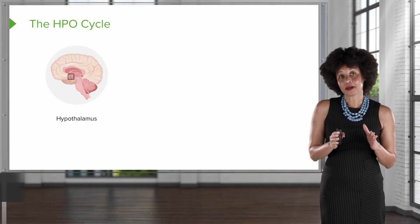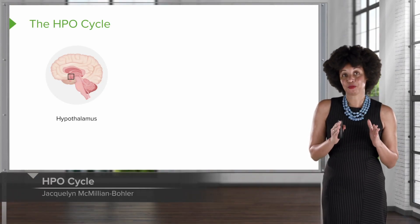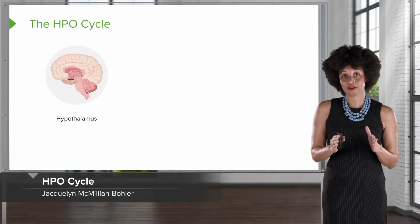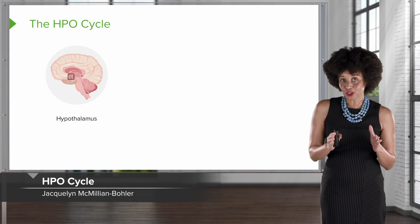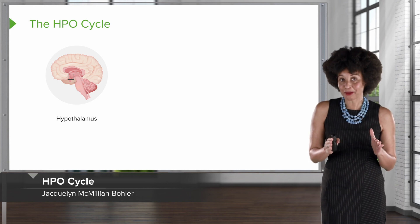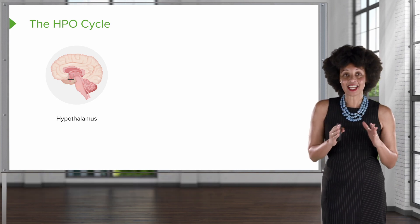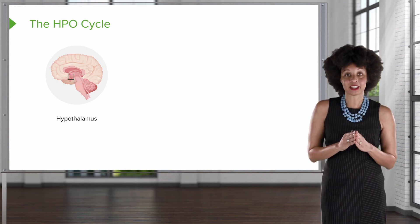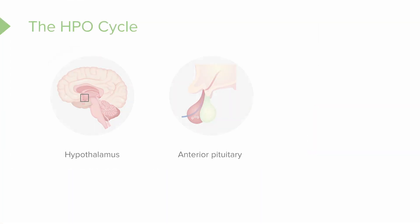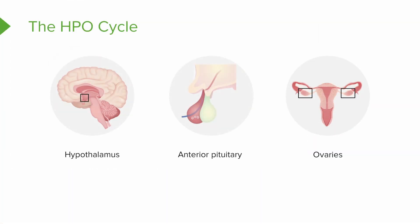So first we're going to talk about the HPO cycle — not to be confused with the popular cable station. HPO stands for hypothalamus, anterior pituitary, and the ovaries.